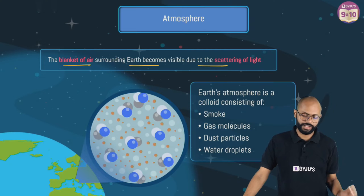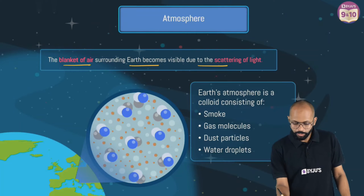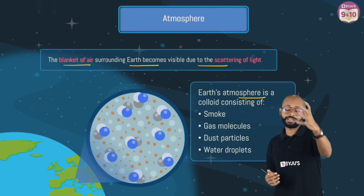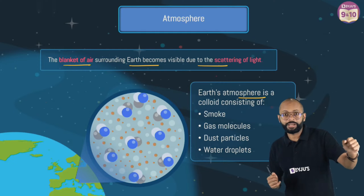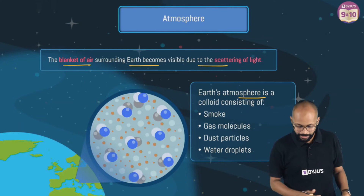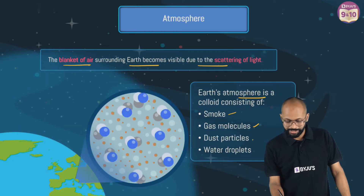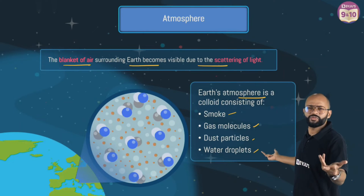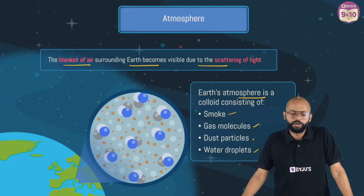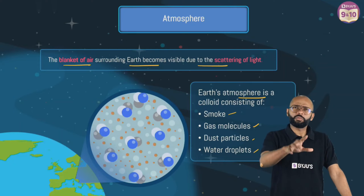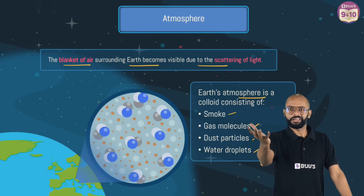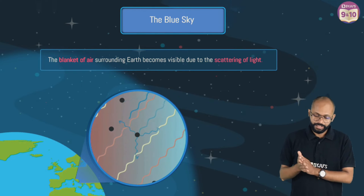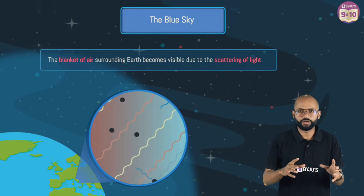The atmosphere is the blanket of air surrounding the Earth, and it becomes visible due to the scattering of light. What is the atmosphere made of? It's the gases — about 71% nitrogen, oxygen about 20%, plus smoke, gas molecules, dust particles, and water droplets. Now, there is atmosphere, but still why is it spreading colors? Why is color visible?